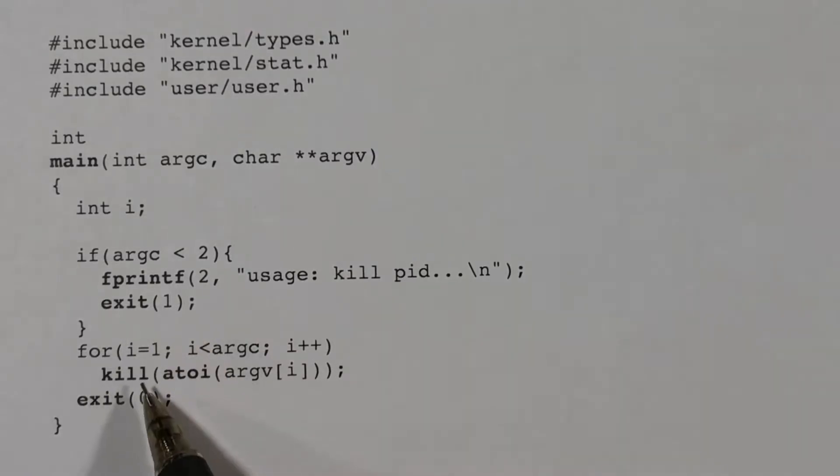It passes arguments. In this case, it passes a one to the system call exit. System calls can return values, but we don't see that happening here.